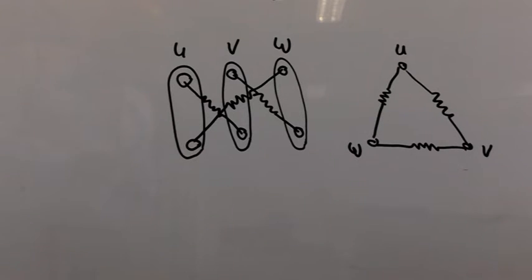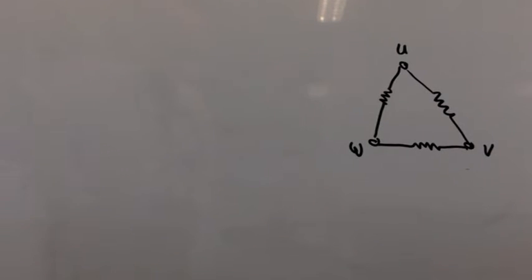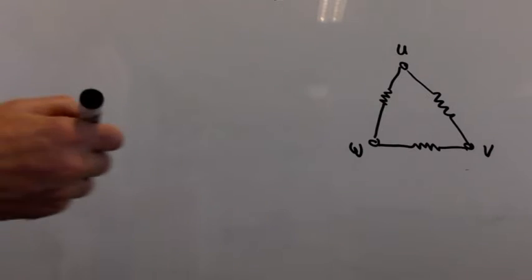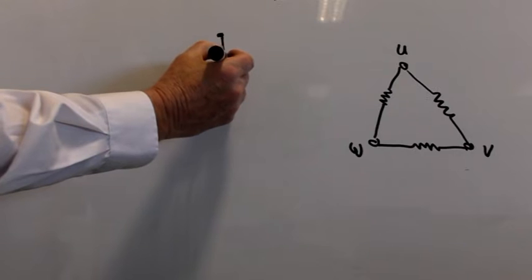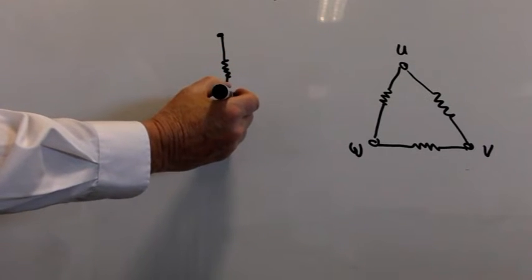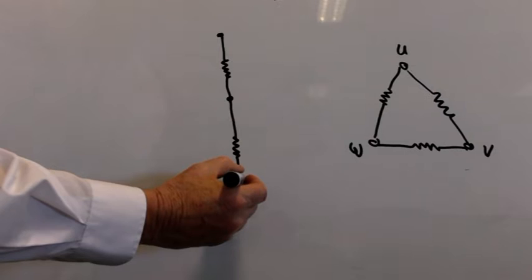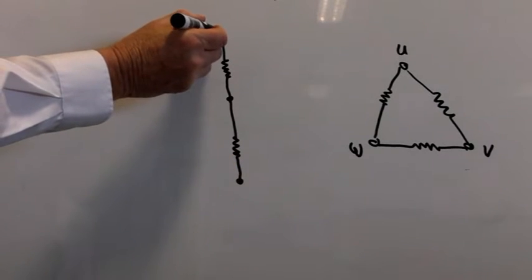Now we can actually draw this slightly different to give us a better understanding of what we're about to do next. Right so if we look at the configuration that we have on the right hand side the delta configuration we can draw this slightly different. So if we put one terminal here one terminal here and one terminal here